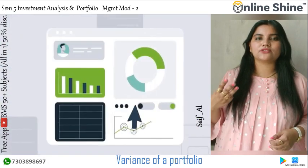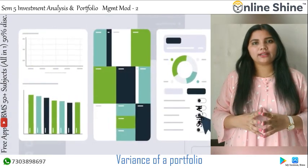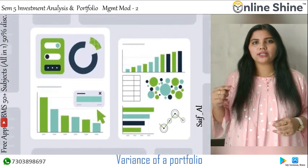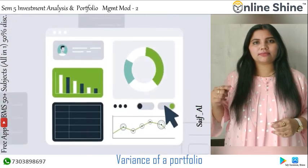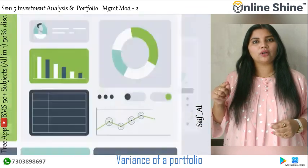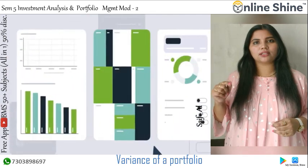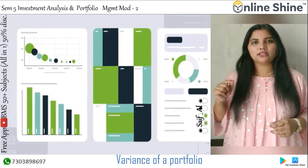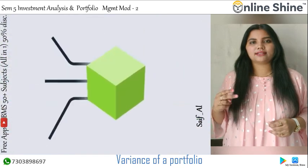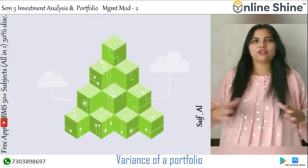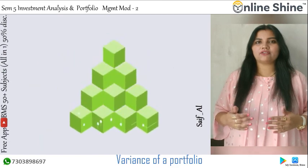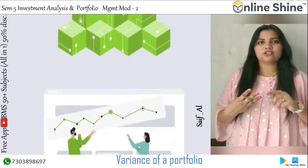For a 3-asset portfolio, the variance formula is: σ² = w₁²σ₁² + w₂²σ₂² + w₃²σ₃² + 2w₁w₂σ₁σ₂ρ₁₂ + 2w₂w₃σ₂σ₃ρ₂₃ + 2w₁w₃σ₁σ₃ρ₁₃. This is the formula for the variance of a 3-asset portfolio. Now we can understand how to calculate variance of a portfolio through the following illustration of diversification benefits in a portfolio of 3 investments.